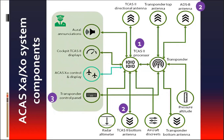3. Connection with the Mode-S transponder to issue complementary and coordinated resolution advisories when both aircraft are equipped with TCAS II. 4. Pressure altitude source. 5. Connection with the radar radio altimeter, which is used to inhibit resolution advisories when the aircraft is in close proximity to the ground. 6. Loudspeakers for the oral annunciations. 7. Cockpit presentation — traffic display and resolution advisory display.